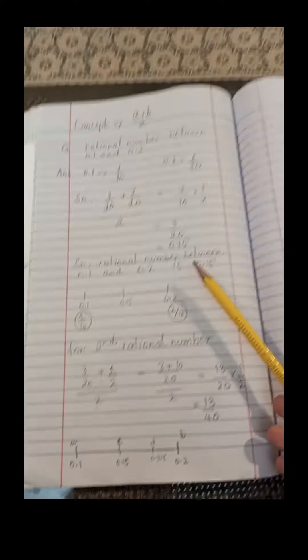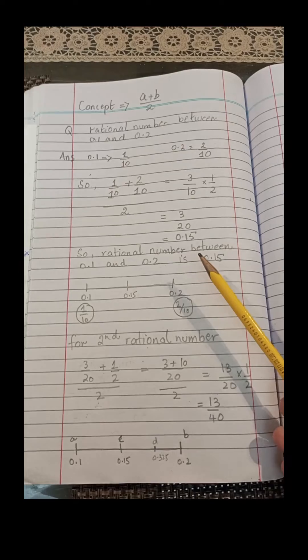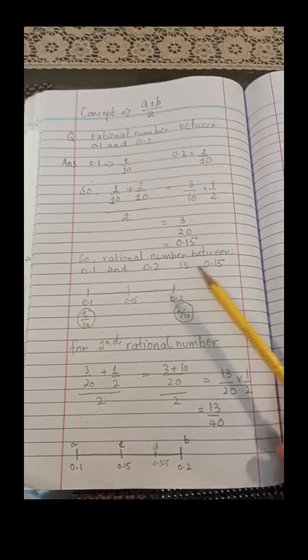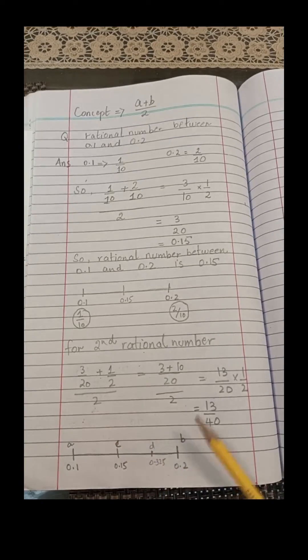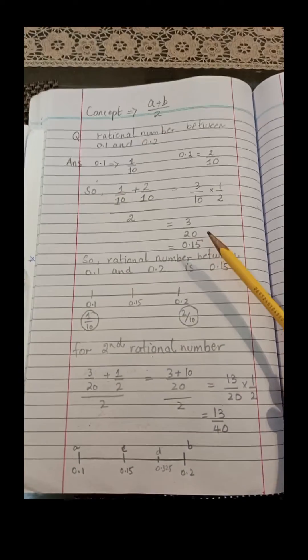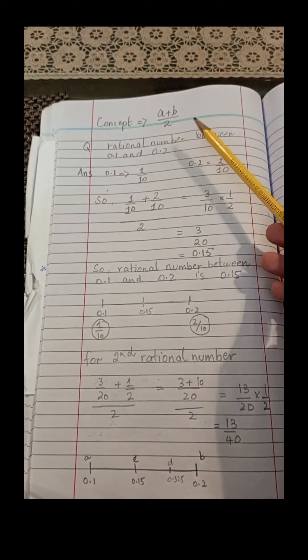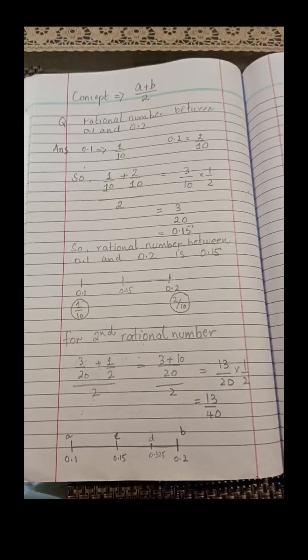The rational numbers between 0.1 and 0.2 are infinite, and you can find as many as you want by applying the simple rule: add both points and divide by 2. Hope you understand.